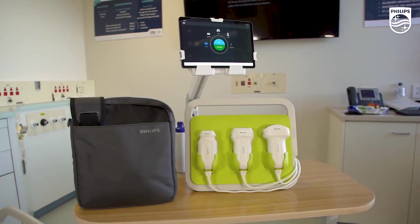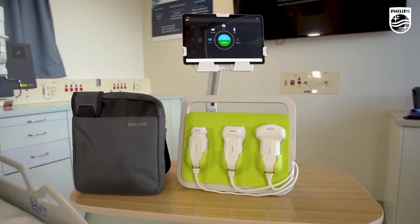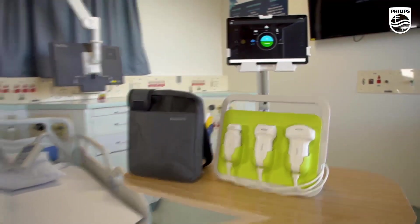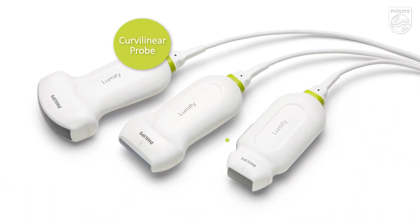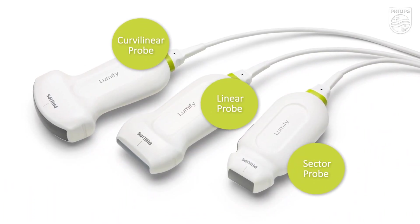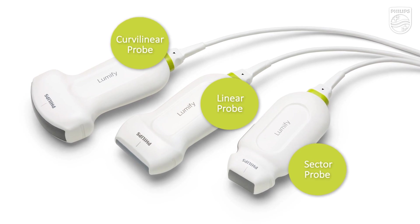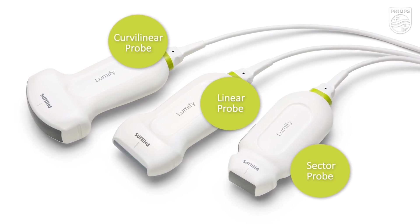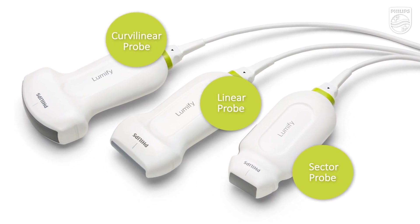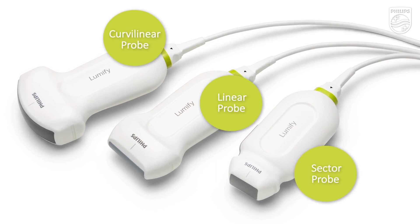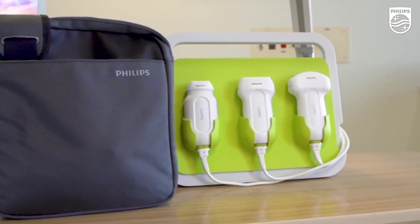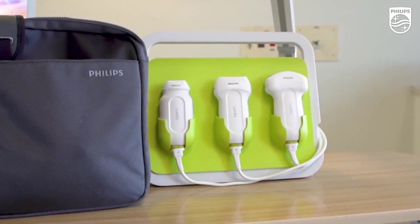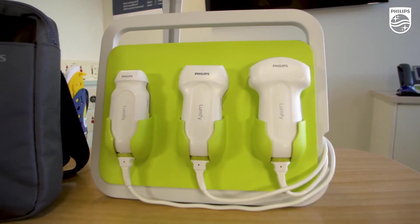For the RUSH protocol you have the option of choosing from three probes. For most of the protocol we use the large curved probe for the abdominal examination, the lungs, and the heart. If you have time you can use the cardiac probe for more detail with the cardiac examination, and at any stage if you need more superficial detail you can use the linear probe.